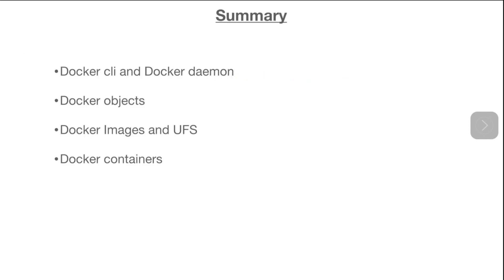Let's review what we have learnt. We came to know about the Docker CLI and the Docker Daemon. We came to know about Docker objects, understood a bit about Docker images and the Union File System, and got an understanding about containers. That's all for this video. In the next video, we will see how to create a Dockerfile for creating our own images.